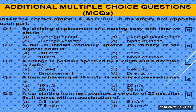By dividing displacement of a moving body by time, we obtain displacement divided by time. Some answers are deliberately given wrong so you find the correct one. The rate of change of displacement divided by time is basically velocity — not average velocity. So velocity is total displacement divided by time. That is the correct answer.